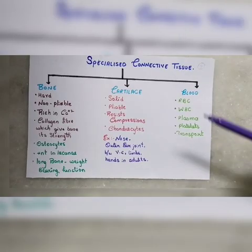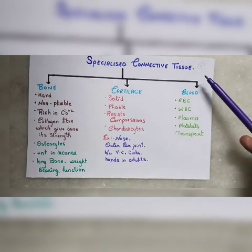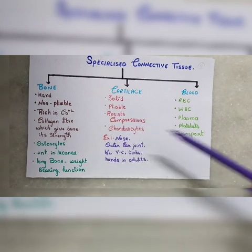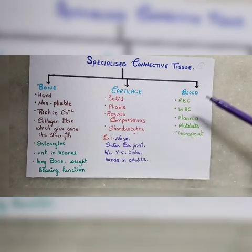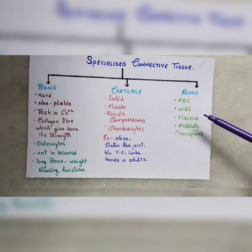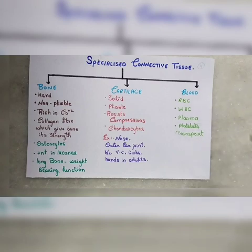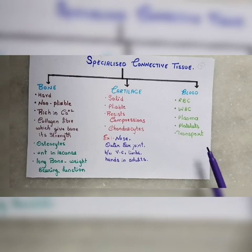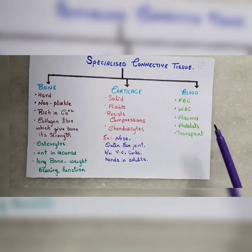Next is specialized connective tissue. We have three types: bone, cartilage, and blood. First, blood — it contains red blood cells, white blood cells, plasma, and platelets. Blood transports hormones and nutrients throughout the body.